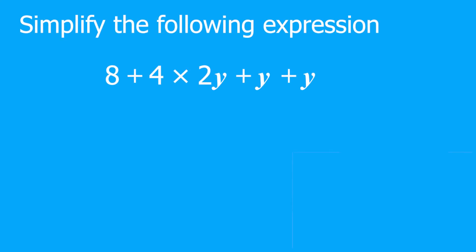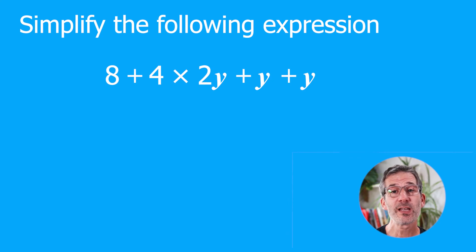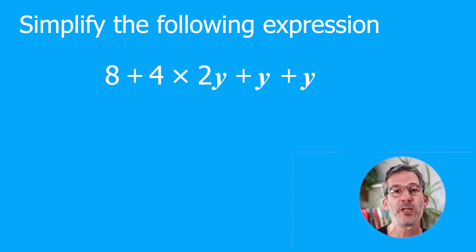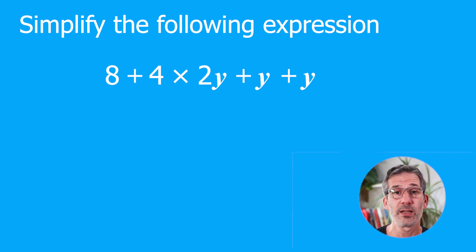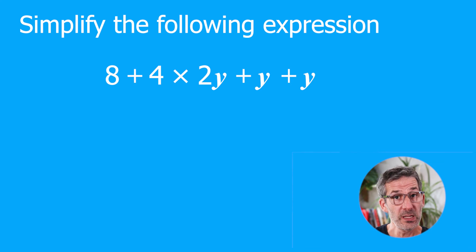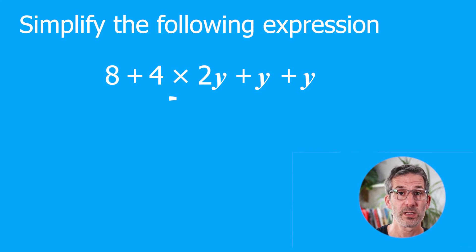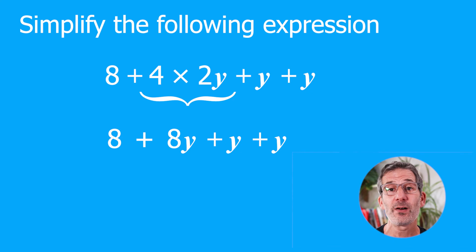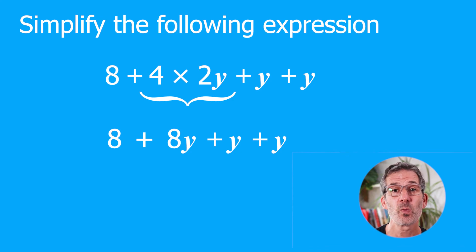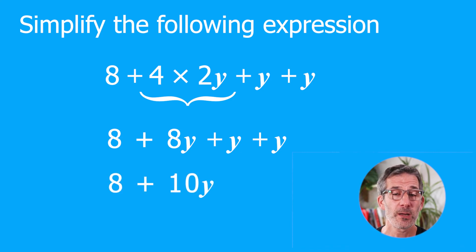Simplify 8 + 4 × 2Y + Y + Y. With mixed operations, we must carry out multiplication before addition. So we do 4 × 2Y first, which gives 8Y. The expression now looks like 8 + 8Y + Y + Y. Gathering the Y's together: 8Y + Y + Y = 10Y. So the answer is 8 + 10Y.